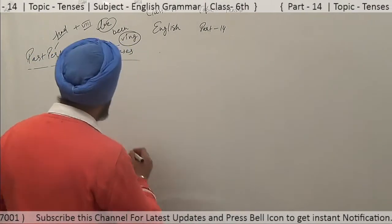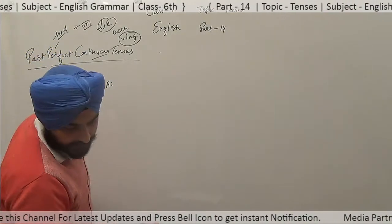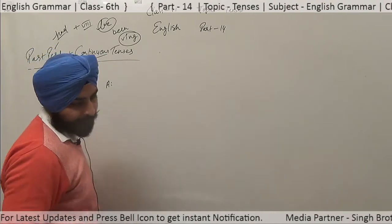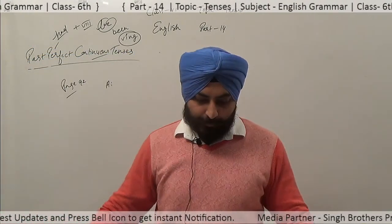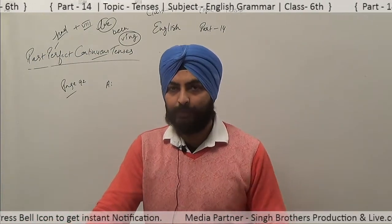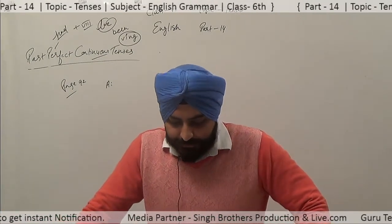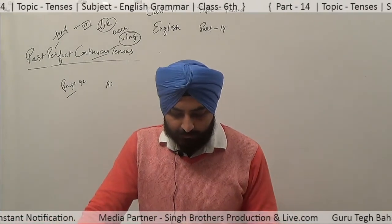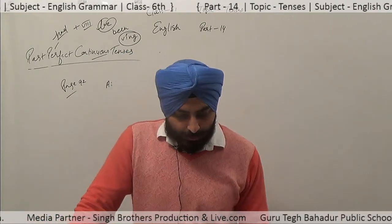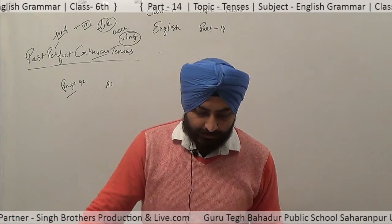We will start Exercise A on page number 92 — fill in the blanks with the appropriate forms of verbs according to the tenses mentioned in the brackets. First: 'My aunt' — tense is past continuous, and the verb is 'bake.' In past continuous, we use 'was/were' plus -ing according to the subject. 'My aunt' is singular, so: was baking.